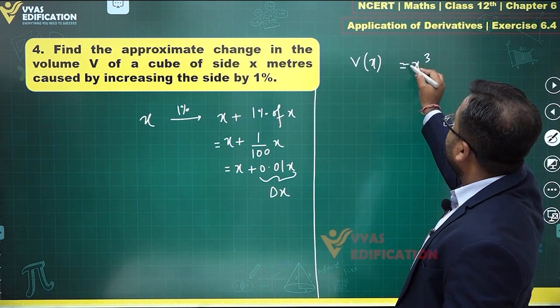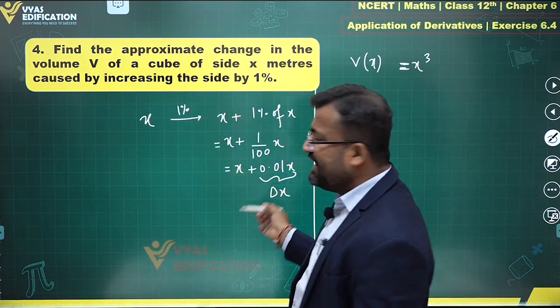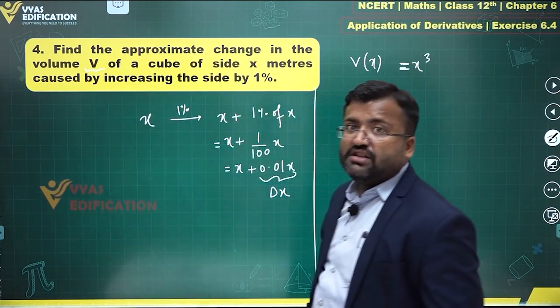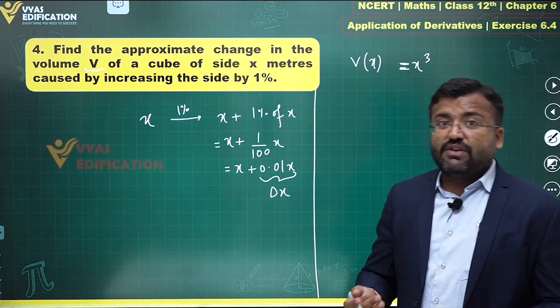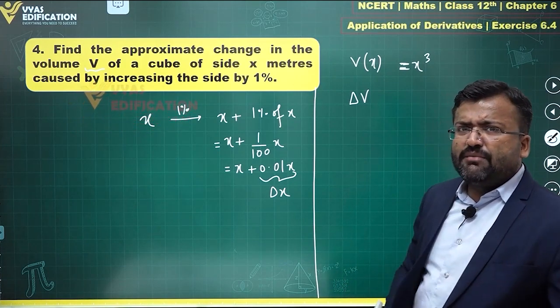Volume as a function of x will be x³. This is what you get, right? And we are increasing, this is addition. Approximate change in the volume is being asked, so we are asked dV. We are not asked V of x plus Δx, we are asked dV, actually ΔV.